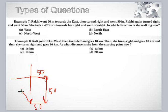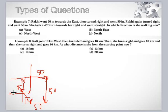She took a 45-degree turn toward her right. Now 45 degrees means: if 90 degrees is this direction, then 45 is this. In which direction is she walking? If I draw the compass cross here — this is east, this is north, this is west, this is south — so which direction is this? This is northwest.